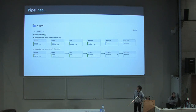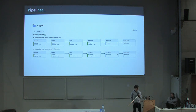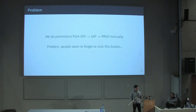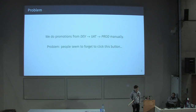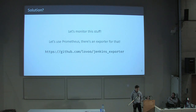Everything is automated, except for one thing for various reasons: we do the promotions from development to UAT to production environments manually. The idea is that everything gets promoted as soon as possible, but for some reason people tend to forget to click this button. So my idea was let's monitor this stuff.